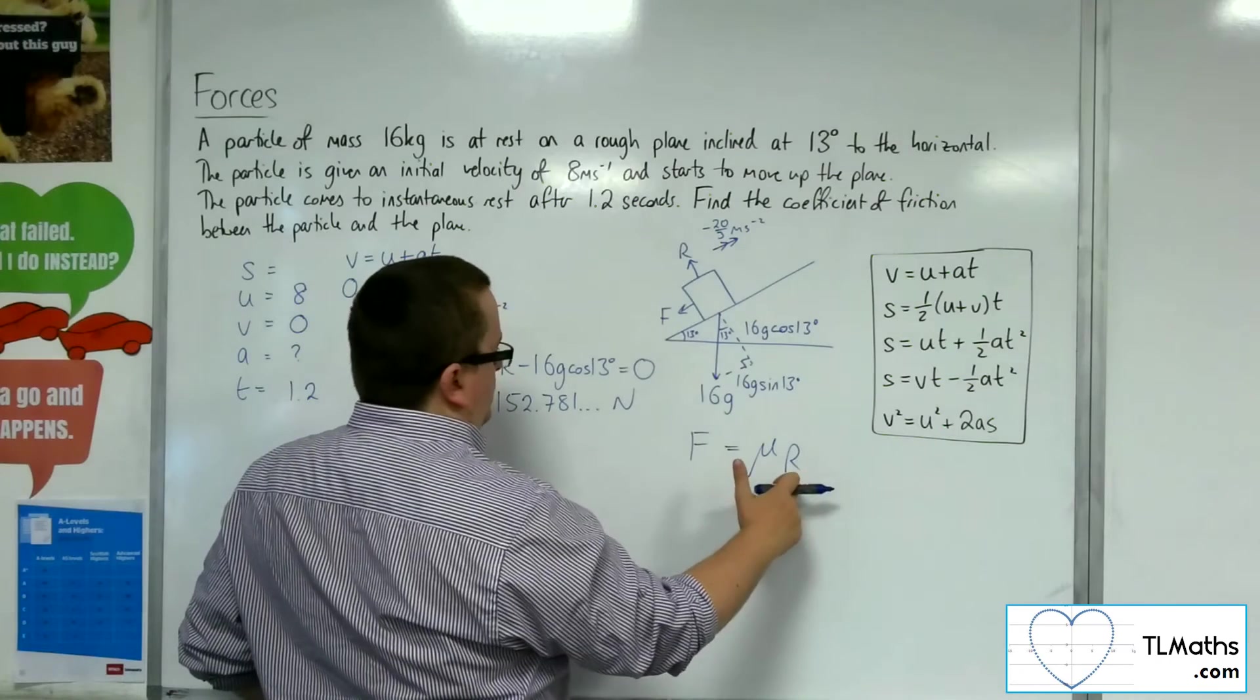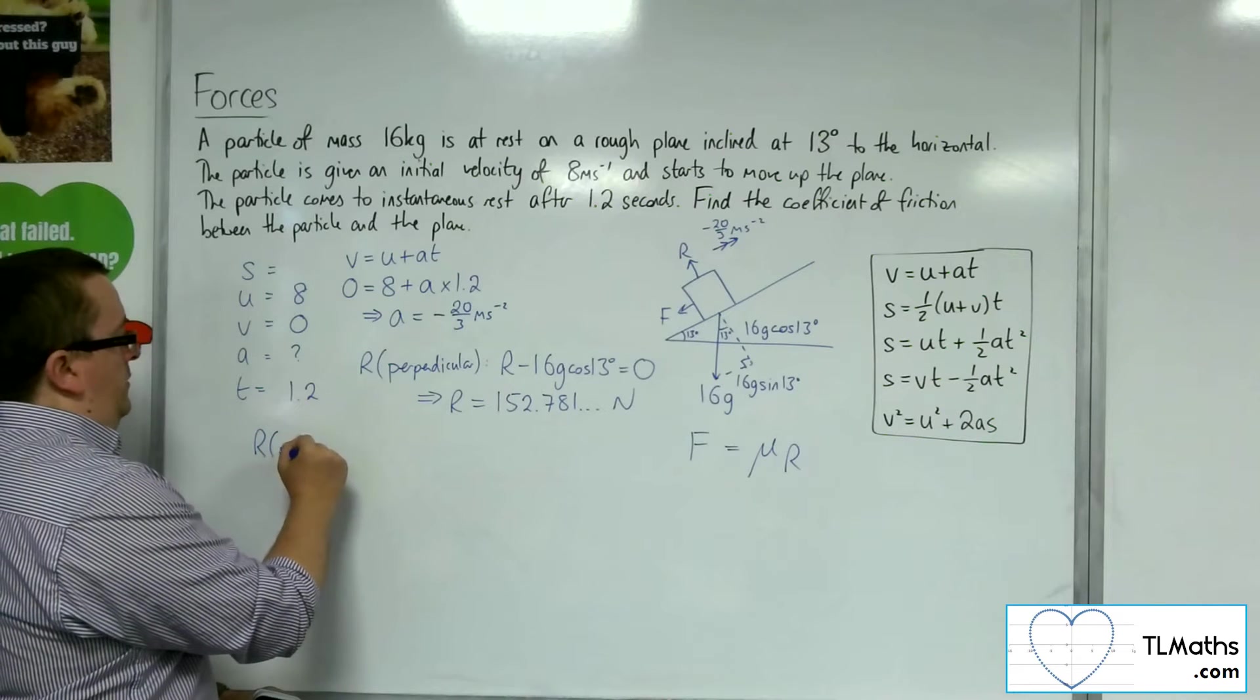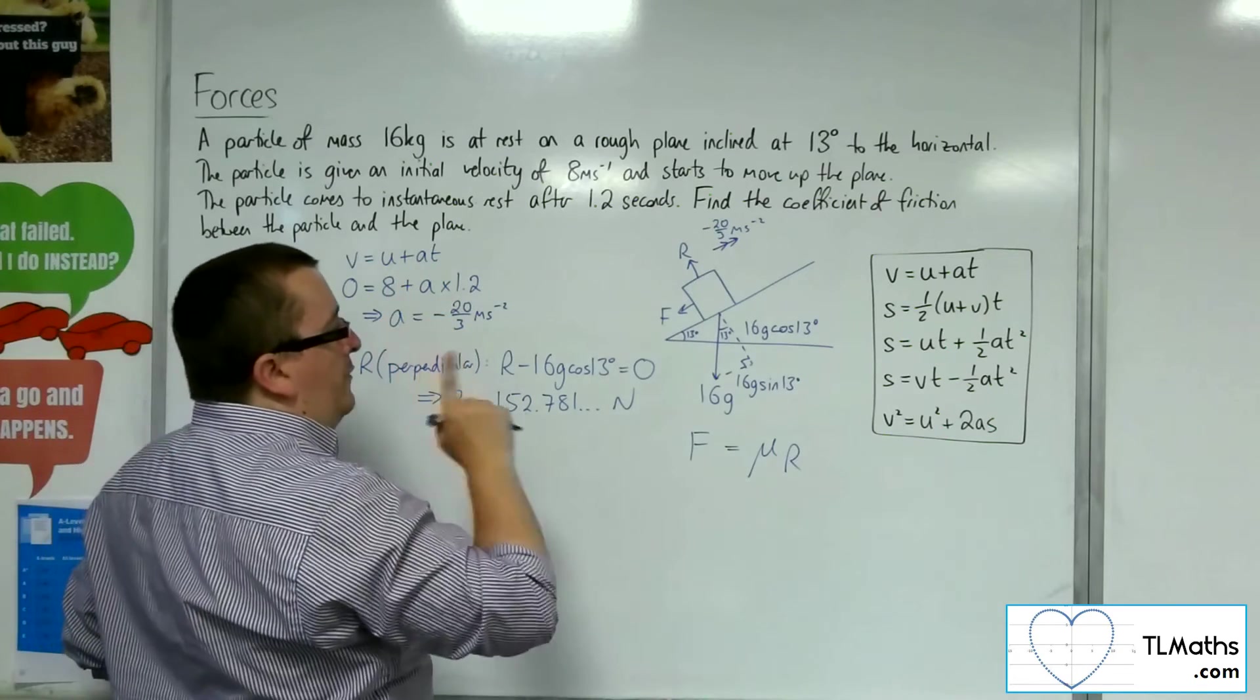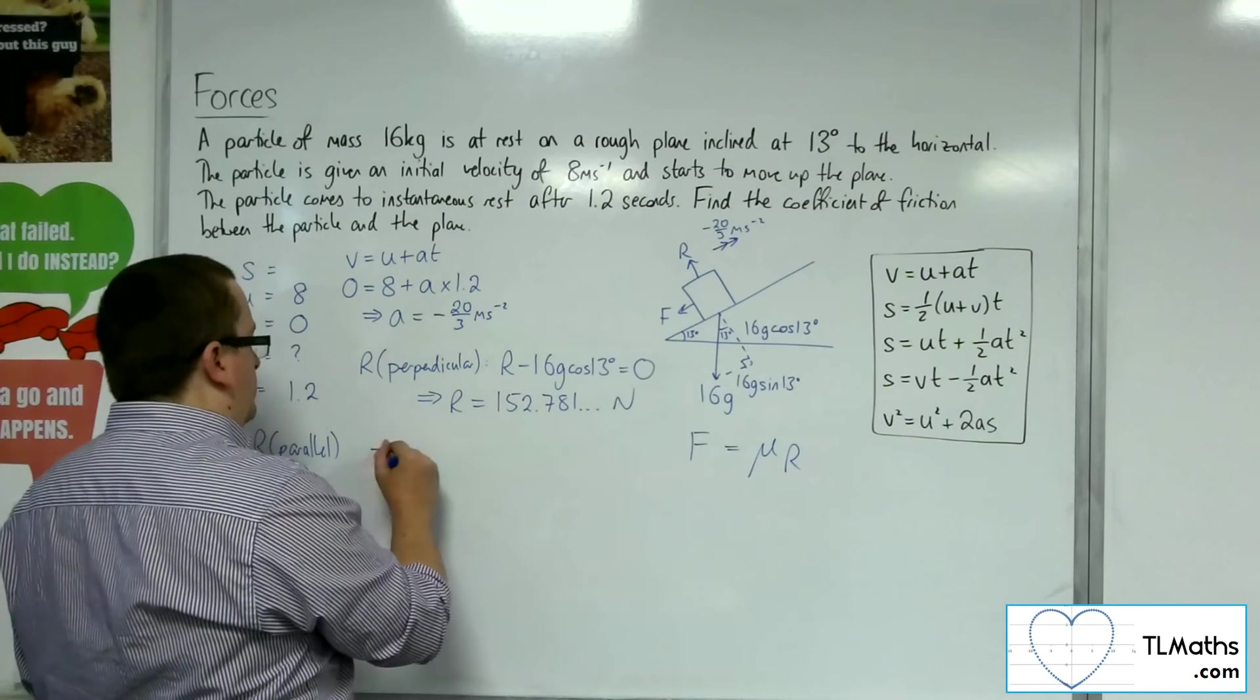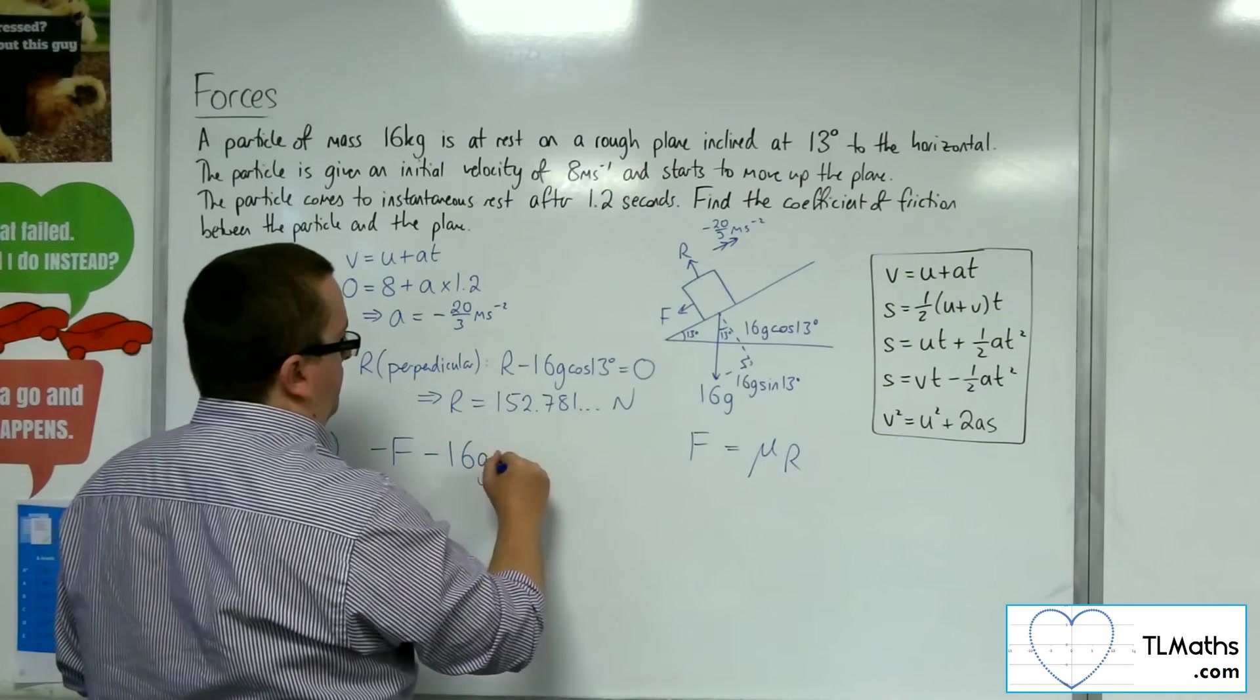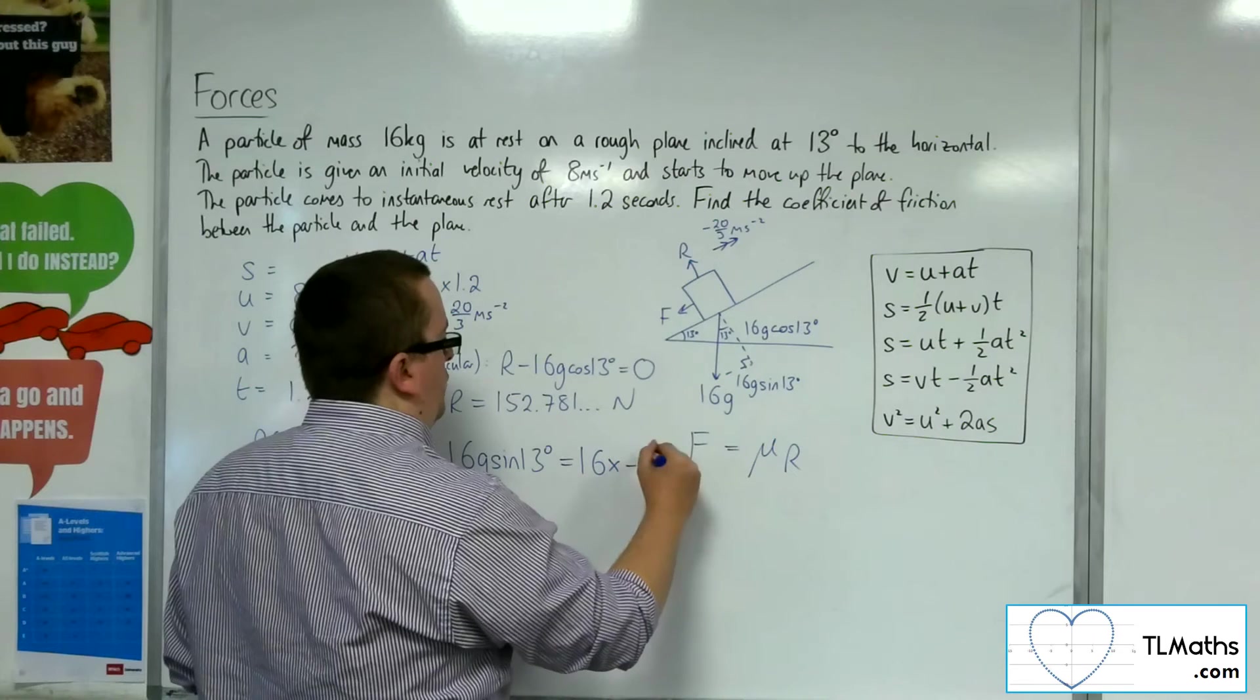Now I've got the R, I don't have the F. So I need the F. If I now resolve parallel to the plane, and I'm going to take up the plane as positive. What I've got is the friction force working against me, I've got the weight working against me, and that's equal to the mass times by the acceleration.